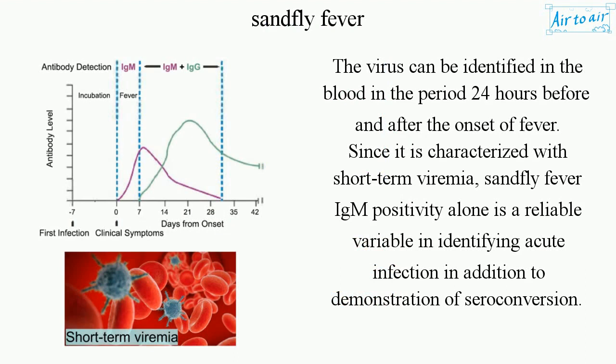The virus can be identified in the blood in the period 24 hours before and after the onset of fever. Since it is characterized by short-term viremia, sandfly fever IgM positivity alone is a reliable variable in identifying acute infection, in addition to demonstration of seroconversion.